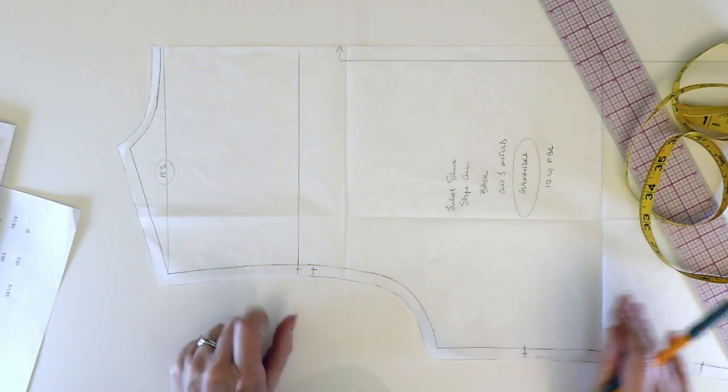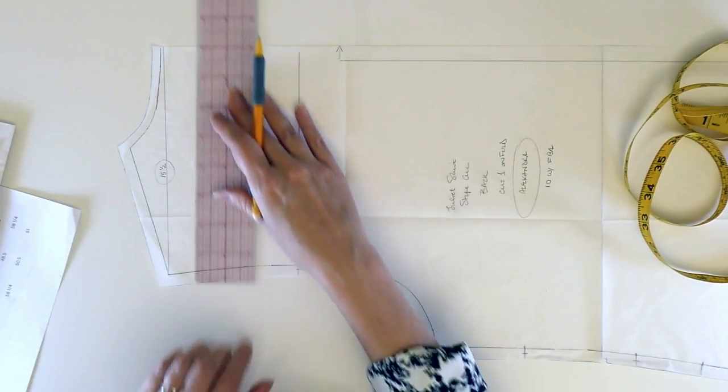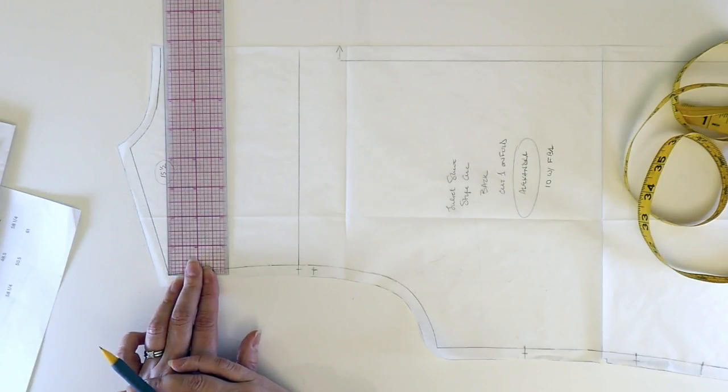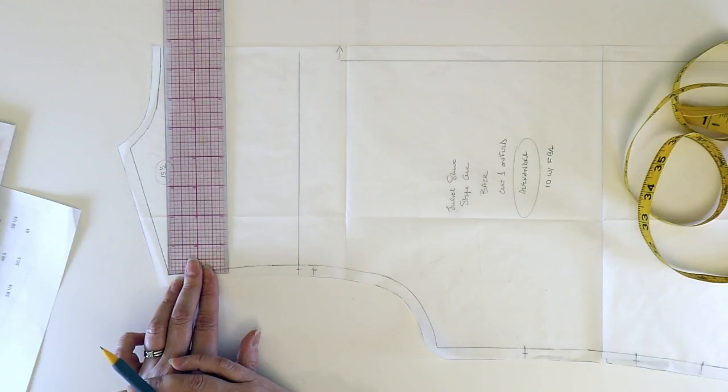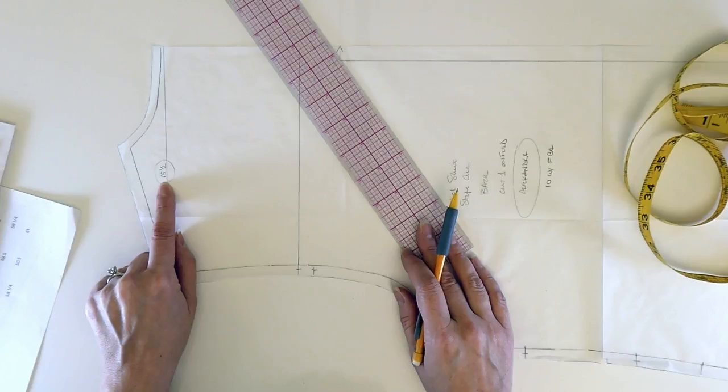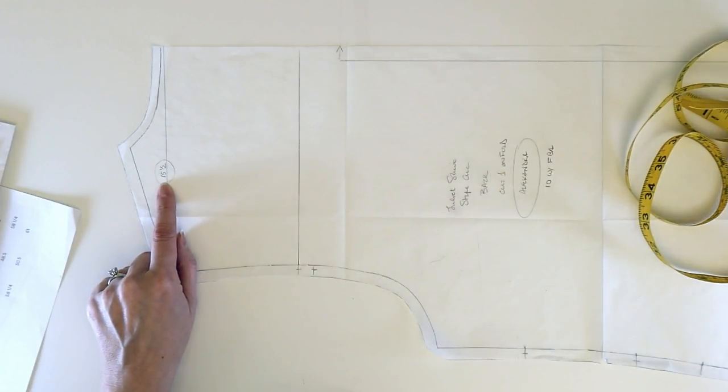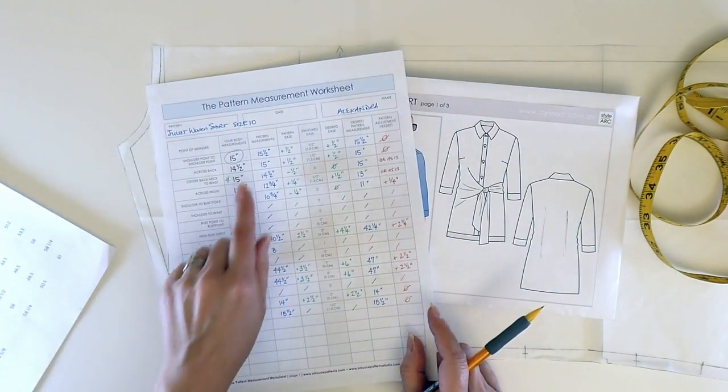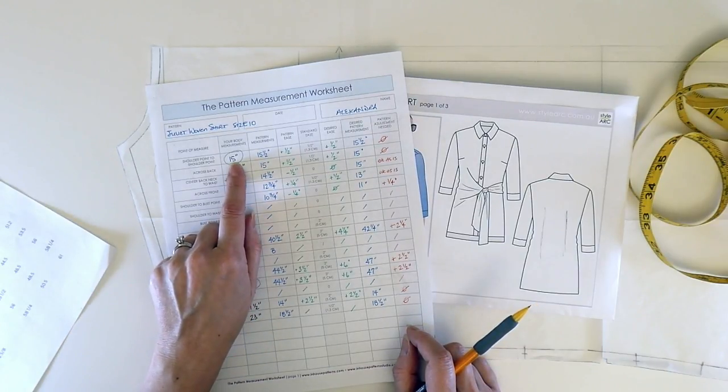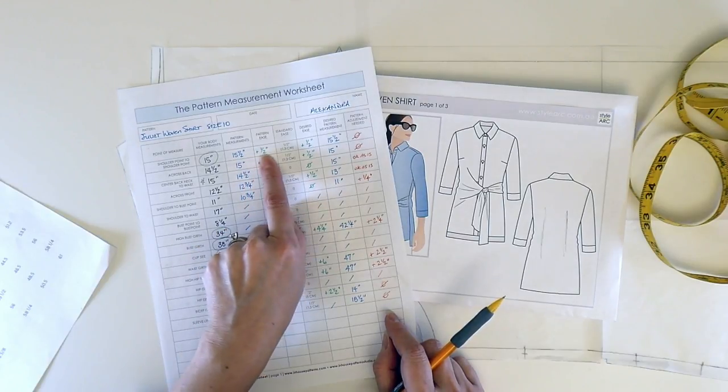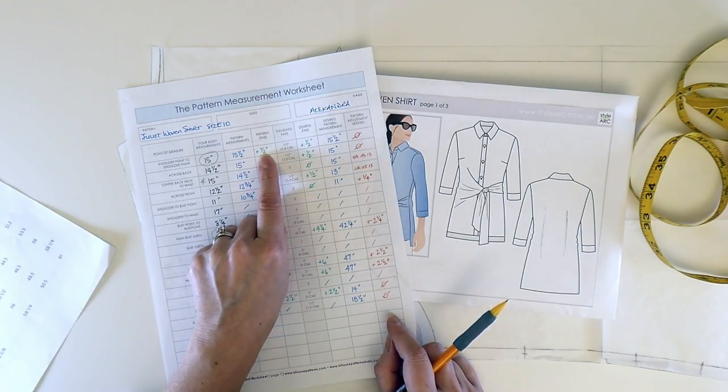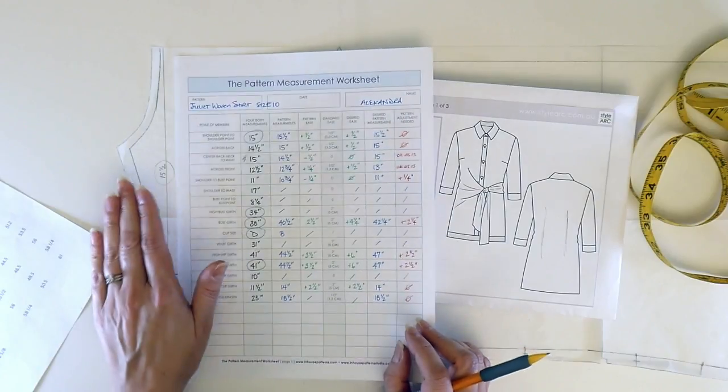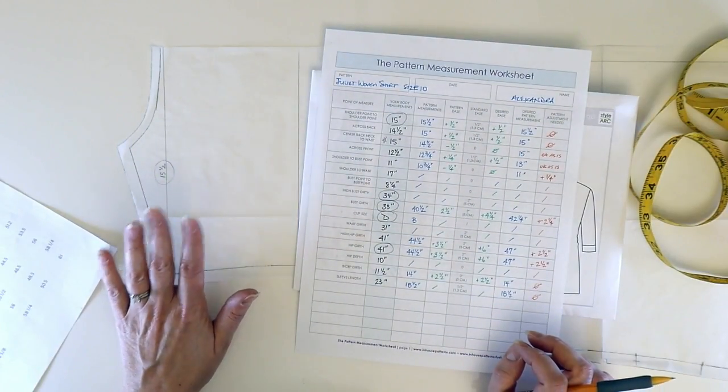If it's a set-in sleeve, simply take your pattern measurement from the shoulder point to center back and then multiply it by two. This is going to give you your shoulder to shoulder measurement on your pattern. And you can see here that mine measures 15 and a half on this size 10 StyleArc pattern. And now I can go back quickly and compare that to my personal body measurement. So my personal body measurement was 15. The pattern measures 15 and a half. This indicates that I have half inch of ease in the shoulder. This just happens to be perfect for a standard type garment like this. I love that it is a half inch. This tells me that I've chosen size 10, which is the right size for me.